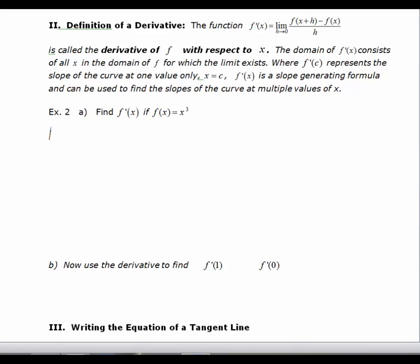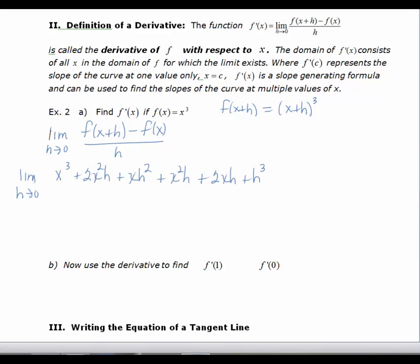We want the limit as h approaches 0 of f of x plus h minus f of x all over h. What we'd like to do first, and I suggest you do this off to the side, is to find f of x plus h, and that happens to be x plus h cubed. I'm going to leave it up to you to do that out the long way. That's the f of x plus h in my numerator. I want to subtract f of x, and f of x is just the x cubed, all over h.